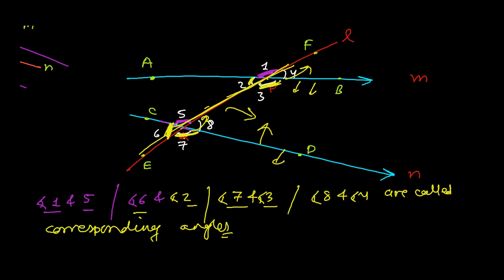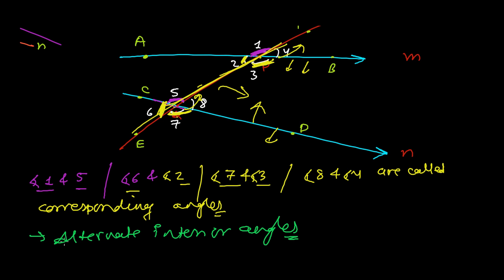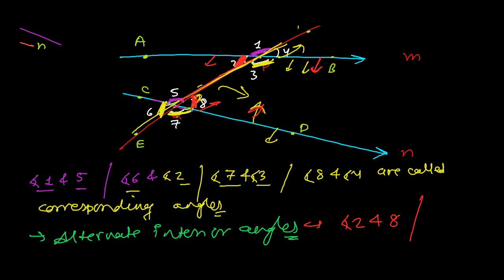Another type of angle is the alternate interior angle — sometimes simply called alternate angles. From the name itself, it is very clear: it is alternate, so one on each side. Both are on the internal side of the two lines. So angle 2 and angle 8 are alternate interior angles. Similarly, angle 3 and angle 5 are also alternate interior angles — these two are alternate and interior.